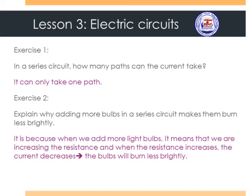Exercise 2: Explain why adding more bulbs in a series circuit makes them burn less brightly. The answer is: when we add more light bulbs, we are increasing the resistance. When the resistance increases, the current decreases, and therefore the bulbs will burn less brightly.